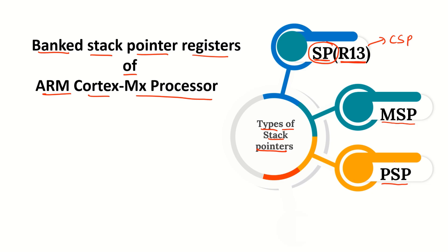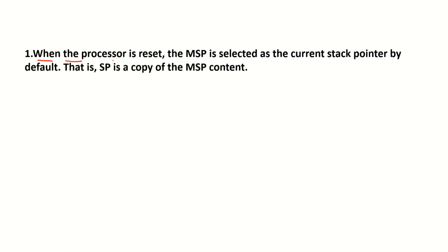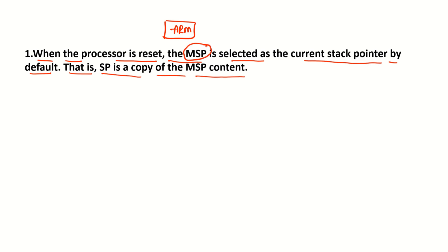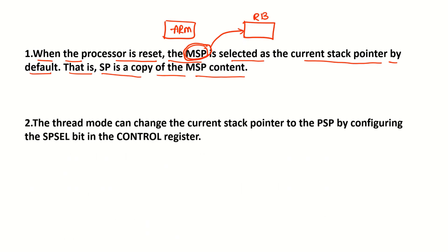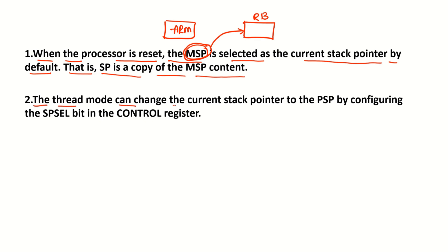When the processor is reset, the MSP is selected as the current stack pointer by default. That is, SP copies the value of the MSP content. Whenever you reset the board, whenever you reset the ARM chip, by default MSP acts as the current stack pointer. That means the R13 register — the current stack pointer register — copies the content present in the MSP. So by default, MSP acts as the current stack pointer when you reset the chip.